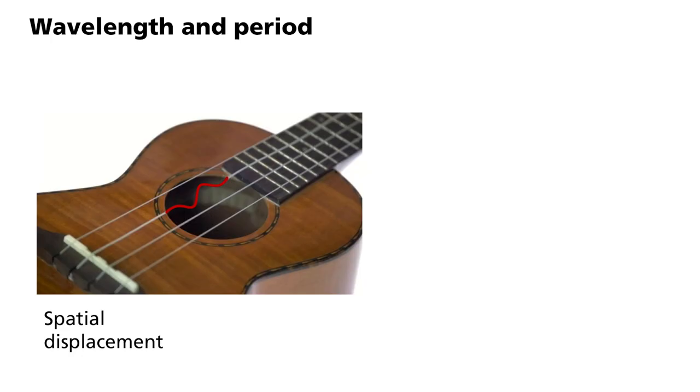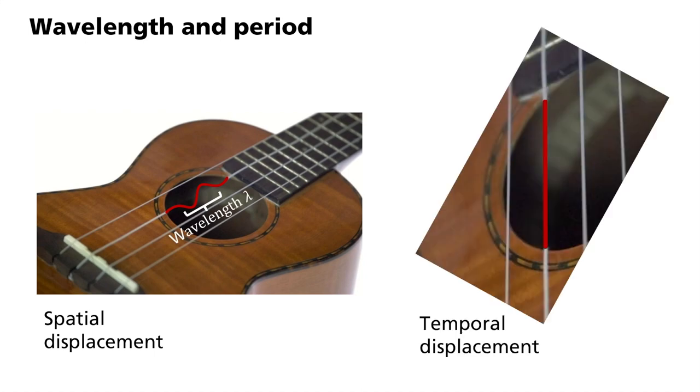At a fixed point in time, let's look at a photo of the string. There are wave peaks and troughs at various locations. Or at a fixed location? Let's hide the right and left parts of the string and concentrate on a small section. In this case, the wave peaks and troughs change over time. The spatial distance between two wave peaks is called the wavelength. The time interval is called the period.